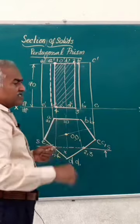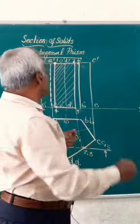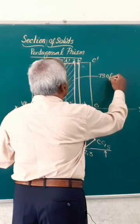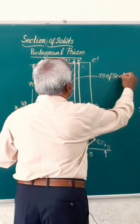Now the hatched area in this will give you the true shape of section. TS means true shape of the section.